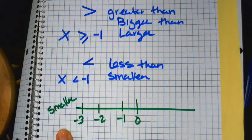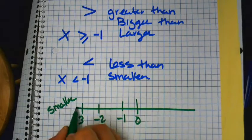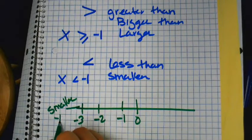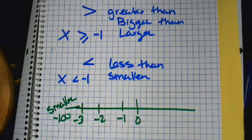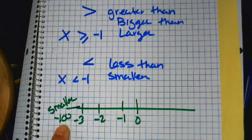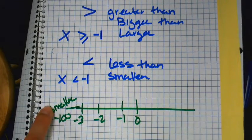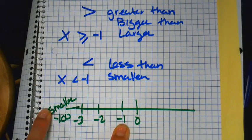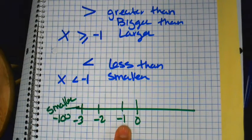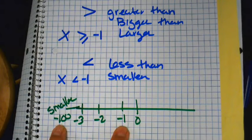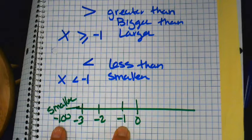Unfortunately, a lot of kids have a hard time understanding that negative 100 is smaller than negative one. What's worse — you owe me a hundred dollars, or you owe me a dollar? A hundred dollars is worse, right? So negative 100 is smaller.